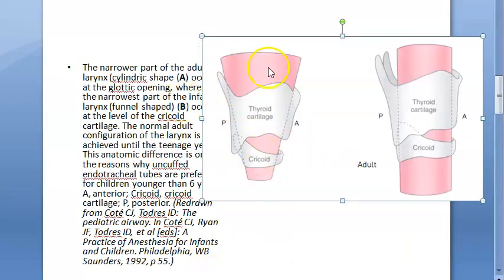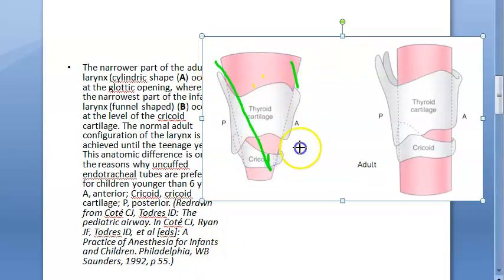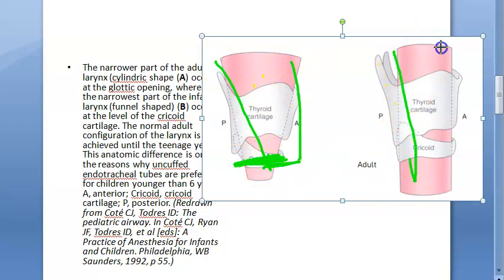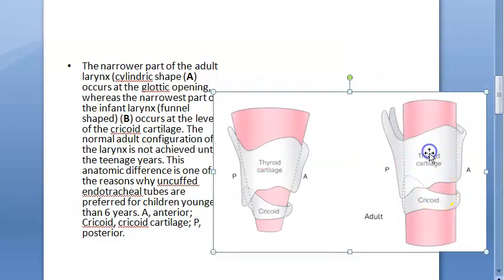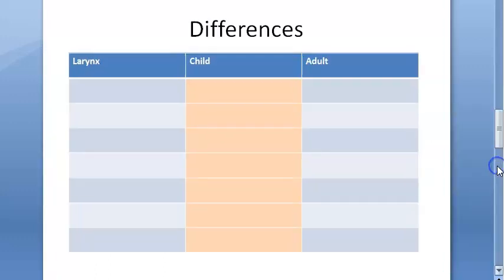For the infant, the larynx is funnel-shaped, as you can see, and the narrow part is at the cricoid cartilage. For the adult, it is cylindrical in shape, and the narrowest part will be at the glottic opening.